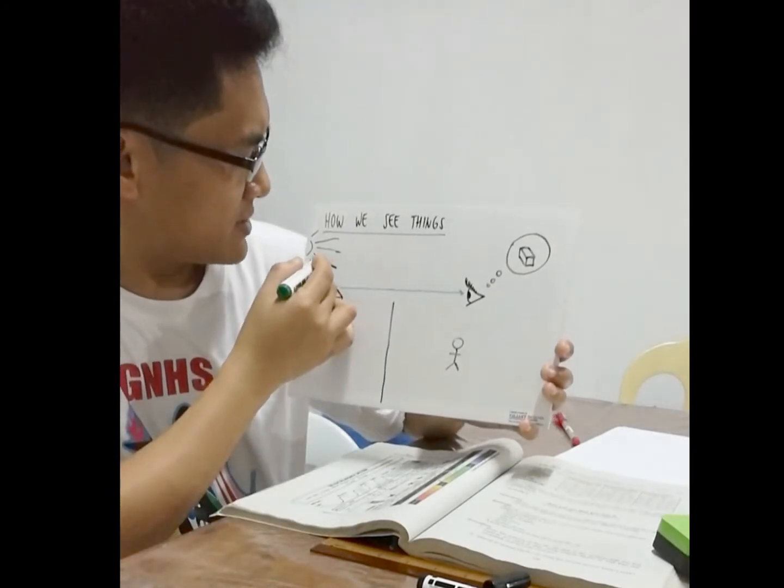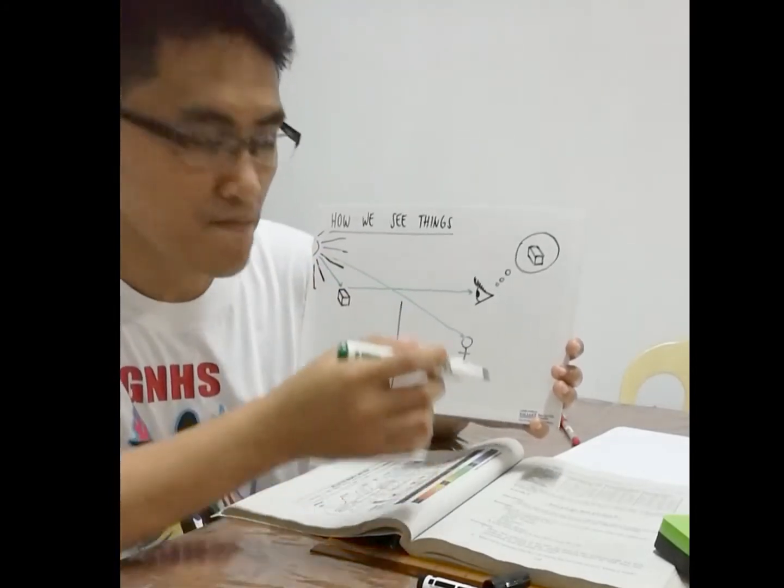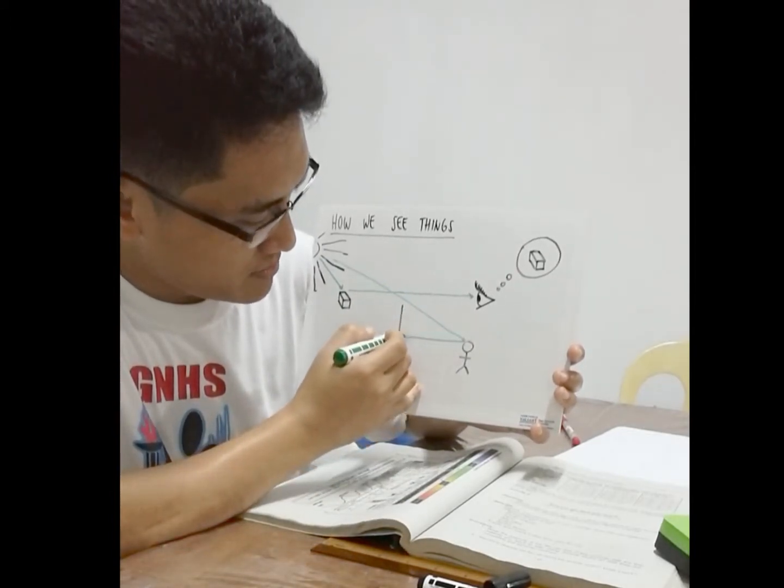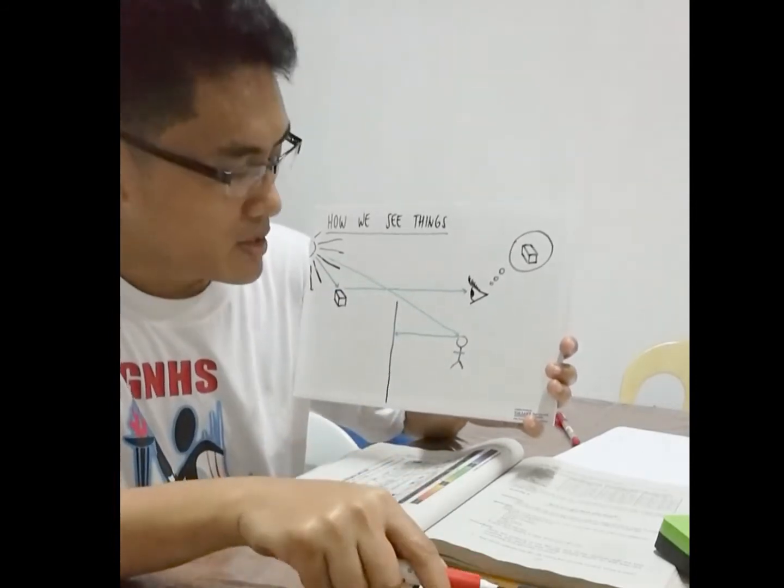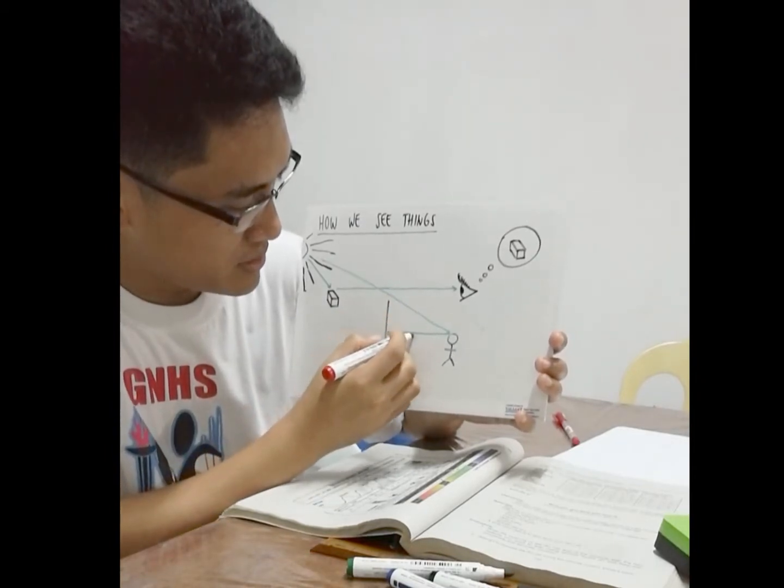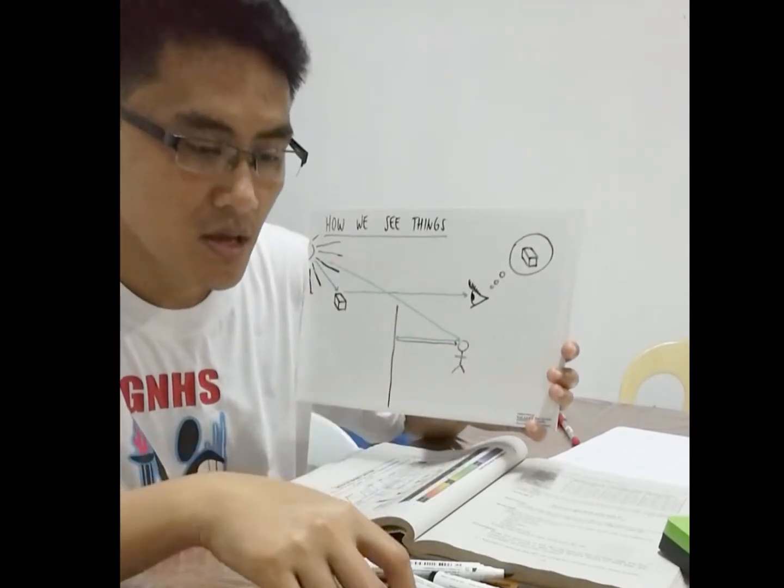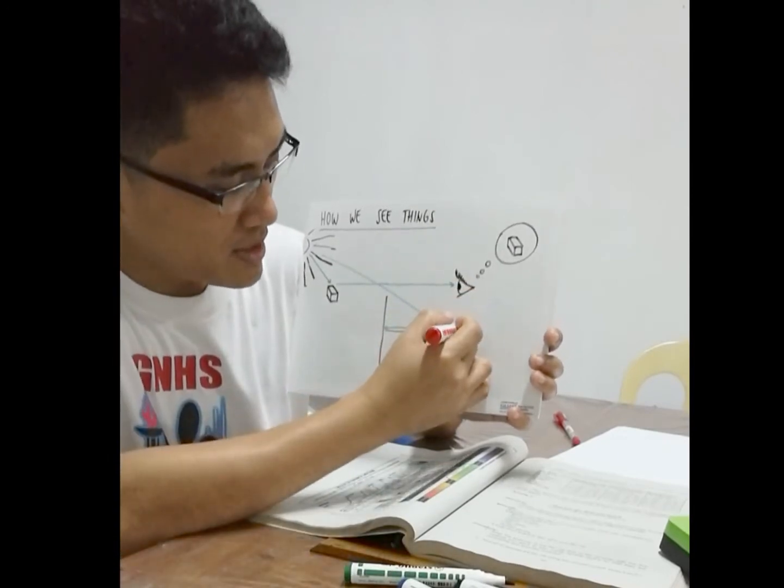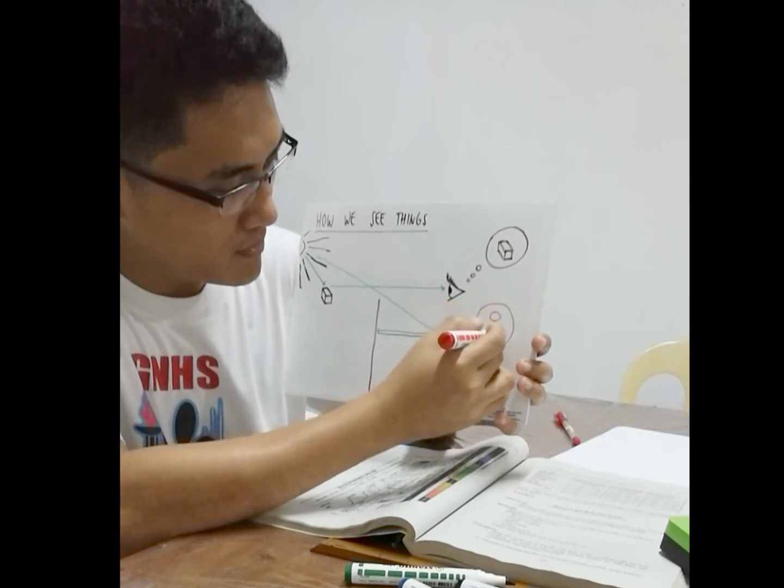Same thing, you have light rays coming from the sun hitting the top of your head, and then it gets reflected towards the mirror. Now, the mirror reflects the light back towards your eyes and enters your eyes. And so, you can see yourself.